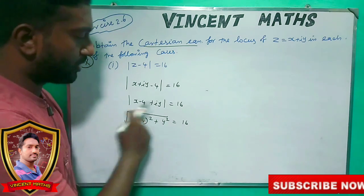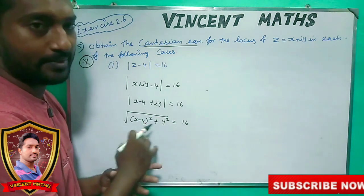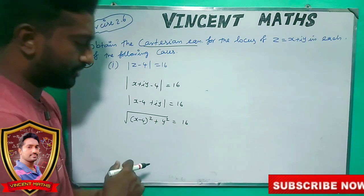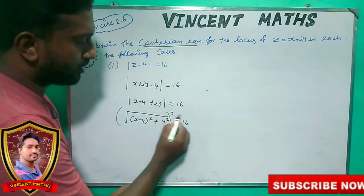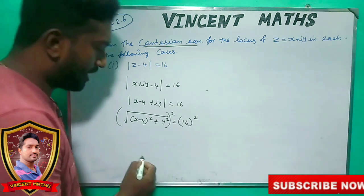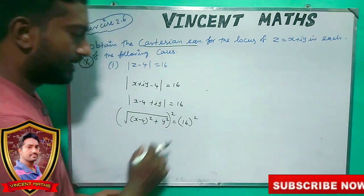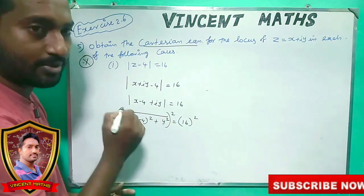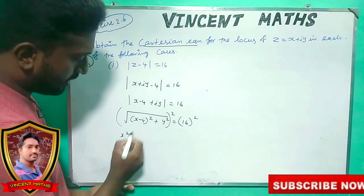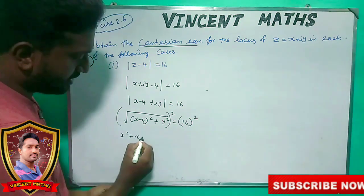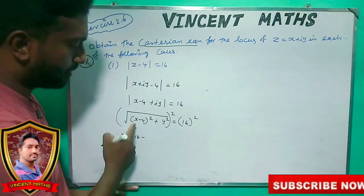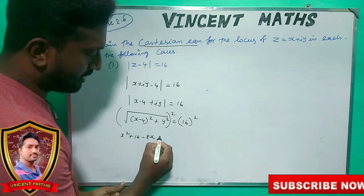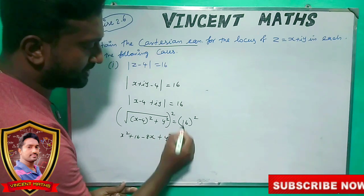Now I cancel this square root. If I cancel this square root — square — what do I do? This square root cancels here: 16 squared. x minus 4, the whole squared. Then a minus b the whole squared: x squared plus 16 minus 2ab. 2 into 4 is 8x. y squared is 256.